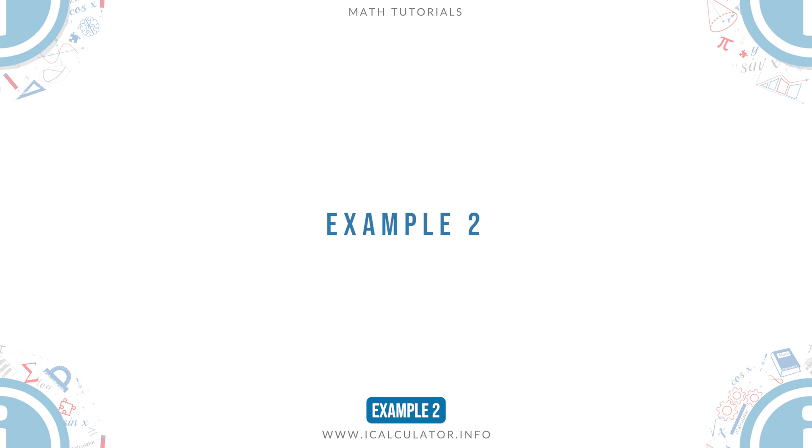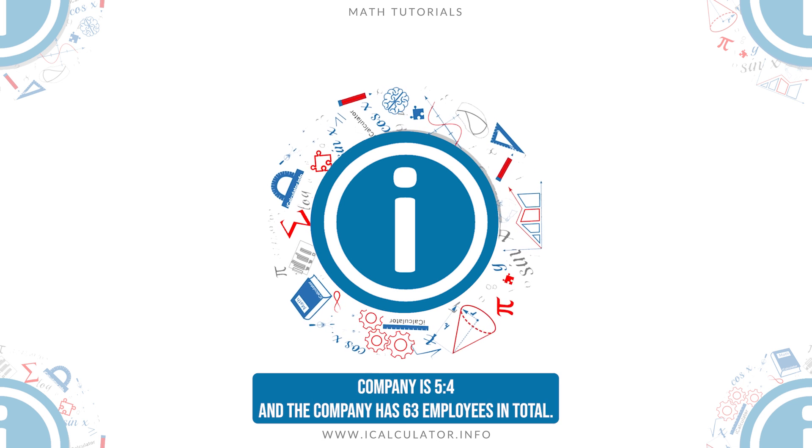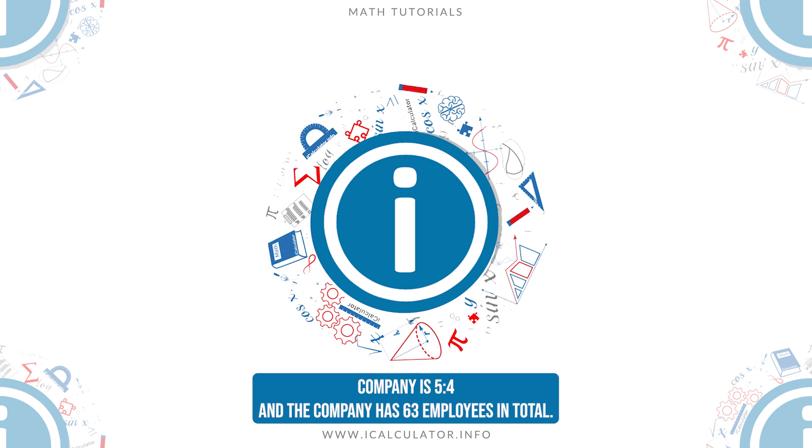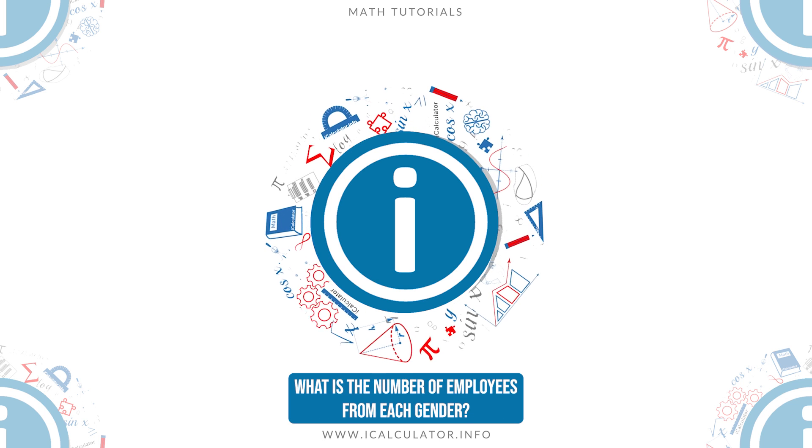Example 2. The female-male ratio in a company is 5 to 4 and the company has 63 employees in total. What is the number of employees from each gender?